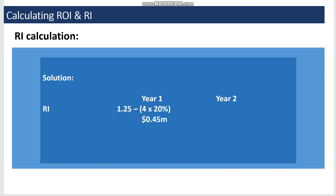For residual income: profit minus investment times cost of capital gives a positive 0.45 million dollars in year one. In year two, using the updated figures, residual income is 0.6 million dollars — also positive. Since residual income is positive in both years, the division generated value addition for the entire organization.